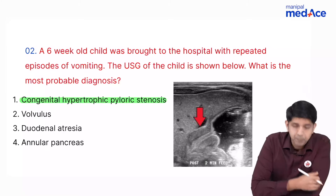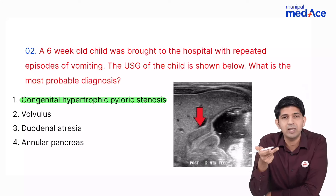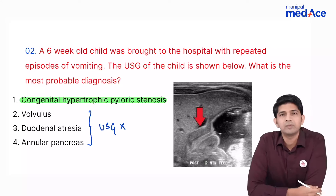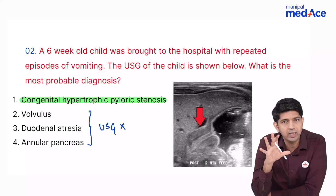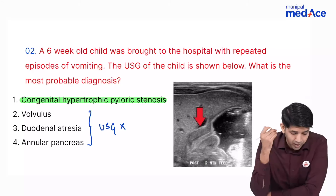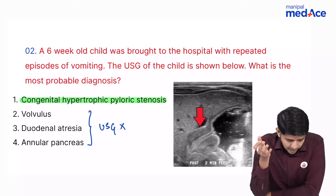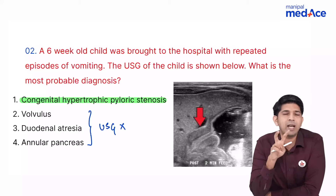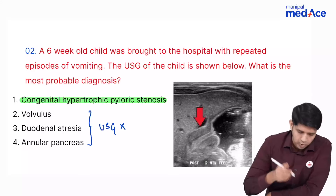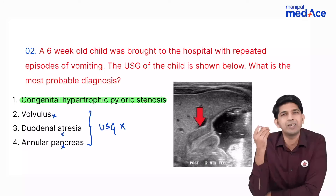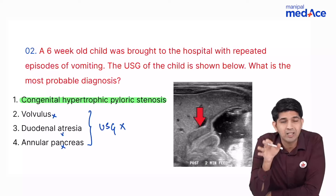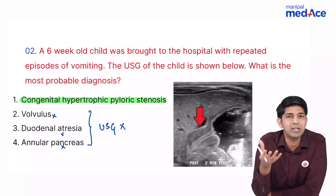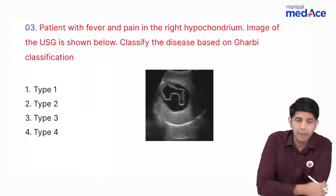Looking at the other options: volvulus is diagnosed on an erect X-ray and wouldn't be expected in this age group. Duodenal atresia and annular pancreas both show a double bubble sign on X-ray, not ultrasound. So all three are ruled out. Two glaring clues — six-week-old child and ultrasound — should have given away the diagnosis as congenital hypertrophic pyloric stenosis.